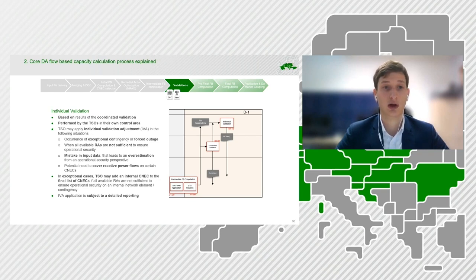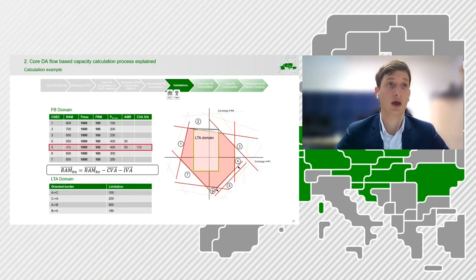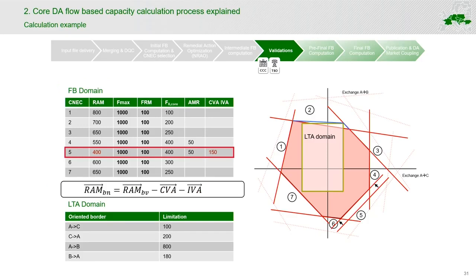Application of the individual validation adjustment is subject to detailed reporting both to NRAs and to market participants. Application of IVA together with justification will be available on the geo-publication platform. How application of IVA looks on a flow-based domain: it is just another component to the equation for calculating the final RAM value. The final RAM value is calculated as RAM before validation minus the coordinated validation adjustment minus the individual validation adjustment. On the flow-based domain picture, it would mean that some connect limitation would be moved closer to the origin.